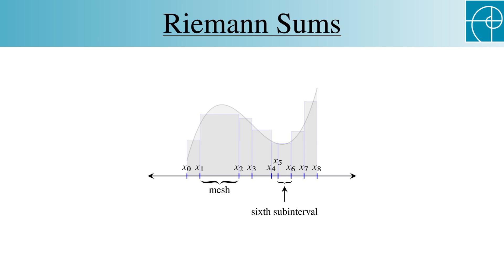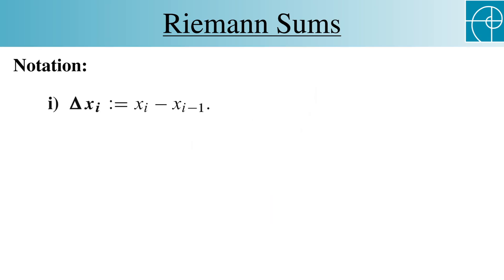We're almost ready to define a Riemann sum. We just need two more pieces of notation. First, delta x sub i is the width of the i-th subinterval. We use delta to indicate change, so these delta x sub i's are the changes in the values of consecutive points in the partition. Second, c sub i denotes any point in the i-th subinterval.